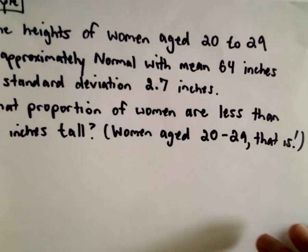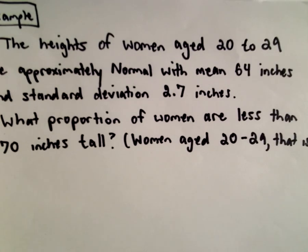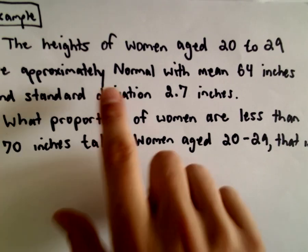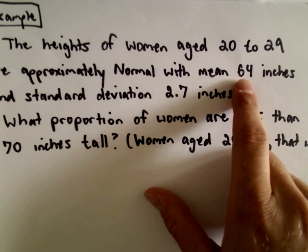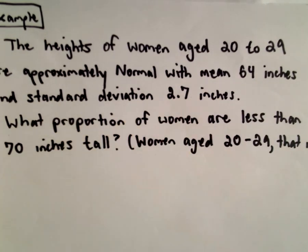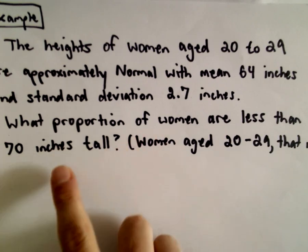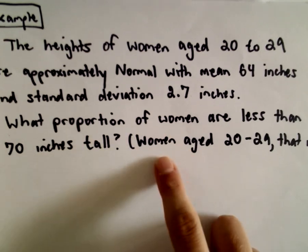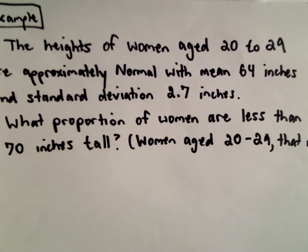Let's look at a quick example. I found this data, I assume this is for women in the USA. The heights of women aged 20 to 29 are approximately normal with a mean of 64 inches and a standard deviation of 2.7 inches. We want to know what proportion of women are less than 70 inches tall.